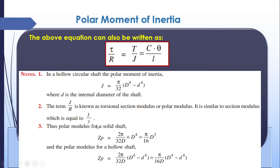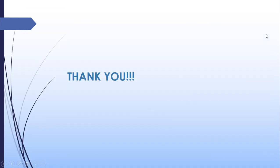The polar modulus for a solid shaft is pi/16 · d³, obtained by dividing the polar moment of inertia pi/32 · d⁴ by R = d/2. For a hollow shaft the polar modulus is pi/16 · D · (D⁴ − d⁴) / D⁴, giving pi/16 · (D⁴ − d⁴) / D. This concludes the lecture on torsion.